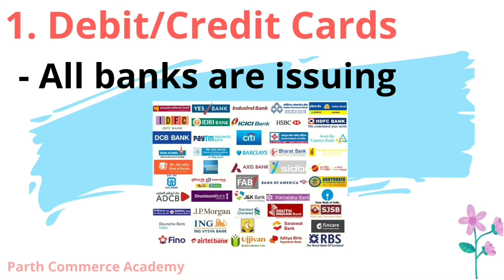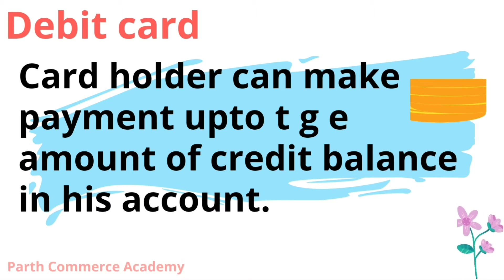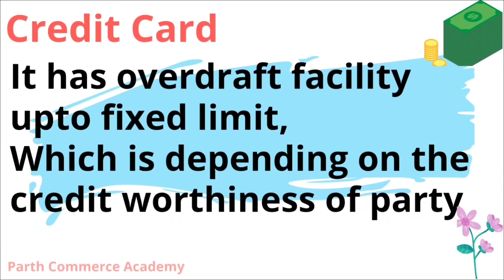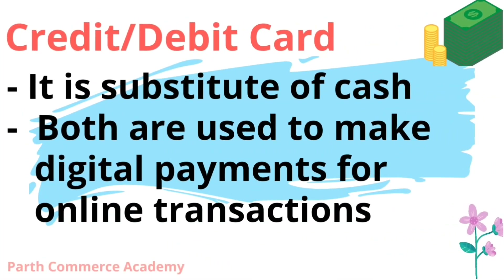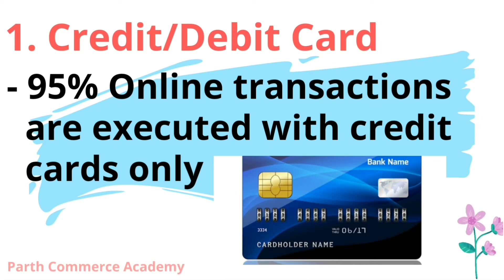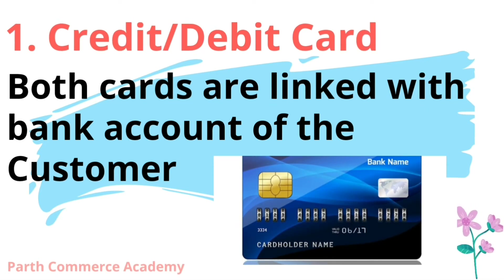Let's see first credit cards and debit cards — also called plastic money. Nowadays every bank is issuing these cards to customers. In the case of a debit card, the account holder can make payment up to the amount of balance in their account — if you have no balance, you cannot make payment through it. In the case of a credit card, the card holder can make payment without balance in their account. It has an overdraft facility up to a fixed limit, depending upon the credit worthiness of the party. Credit card is a substitute of cash. Both cards are used to make digital payments for online transactions — actually 95% of online transactions are executed through credit card only. Both cards are linked with the bank account of customers.